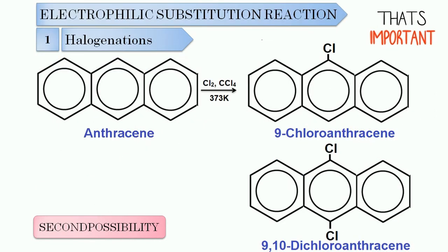In the second possibility, 9-chloroanthracene is the major product, while 9,10-dichloroanthracene is the minor product. So that is all about the halogenation, and there are two possibilities which depend upon the solvent as well as temperature.